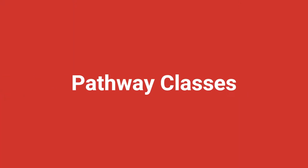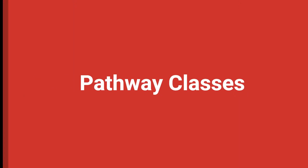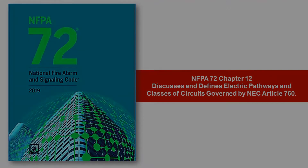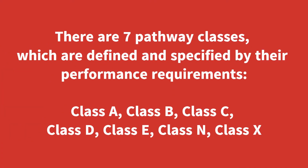NFPA 72 Chapter 12 discusses and defines electrical pathways and classes of circuits governed by NEC Article 760. There are seven pathway classes, which are defined and specified by their performance requirements. Class A is the most stringent pathway class and it has five critical must-have performance requirements.